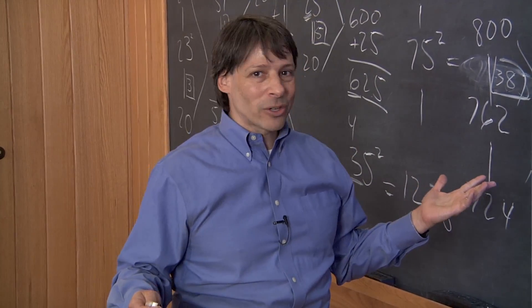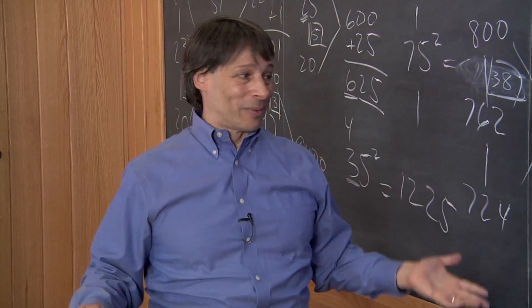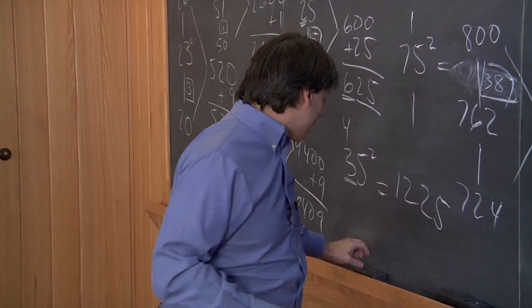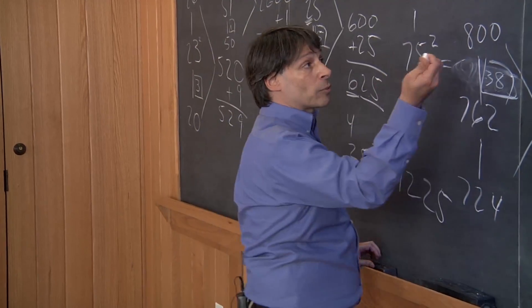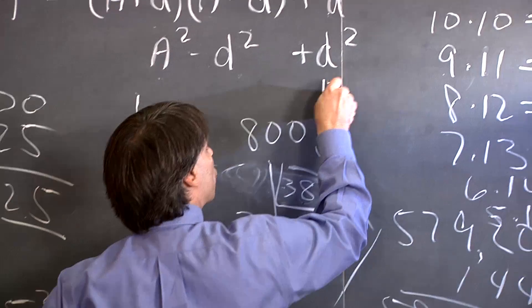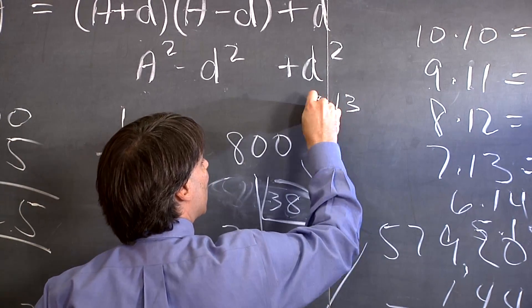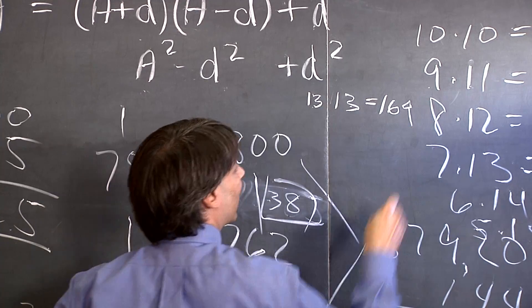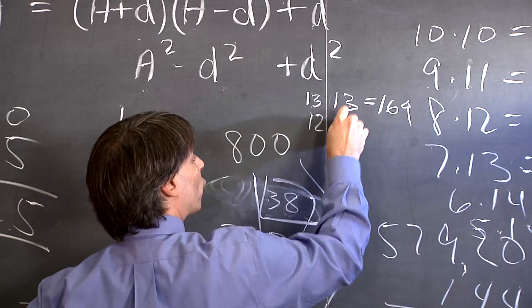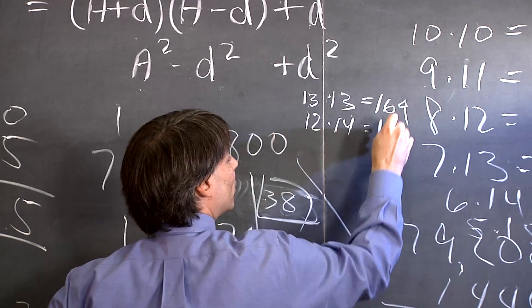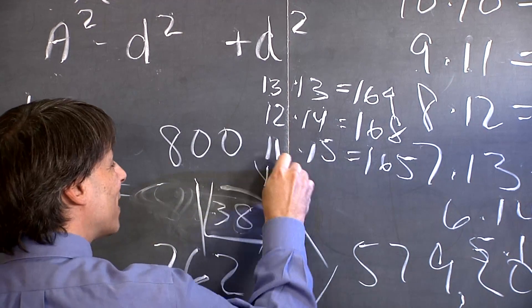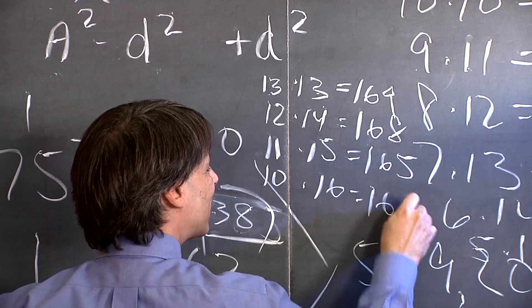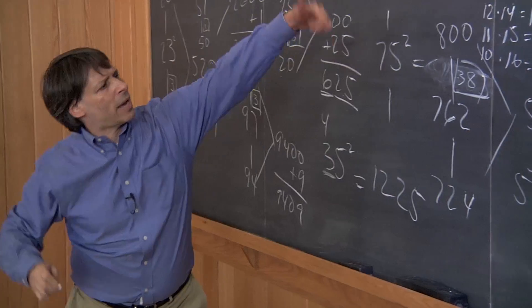Well how do you tell if something always works? You try another example. So I tried another example. I looked at the numbers that added up to 26, like 13 and 13. They multiplied to 169. Then I did 12 times 14, which multiplied to 168. 11 times 15 multiplied to 165. 10 times 16 is 160. And again, the same pattern.